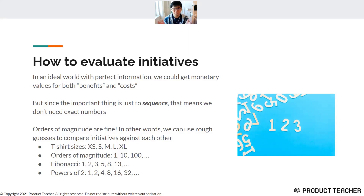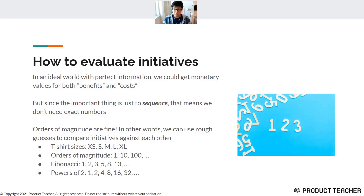Some ways to approximate benefits and costs: we can use t-shirt sizes (extra small, small, medium, large, extra large), orders of magnitude (1 vs 10 vs 100 vs 1000), the Fibonacci sequence (1, 2, 3, 5, 8, 13, 21, etc.), or powers of 2 (1, 2, 4, 8, 16, 32, 64, etc.). These are all great ways to roughly size how big or small a benefit or cost is.